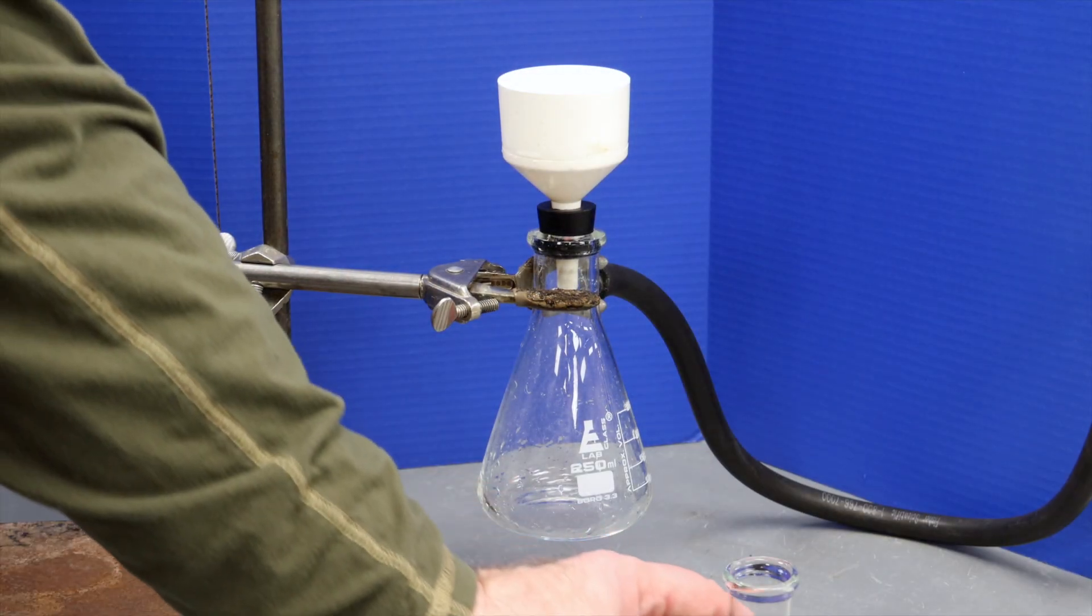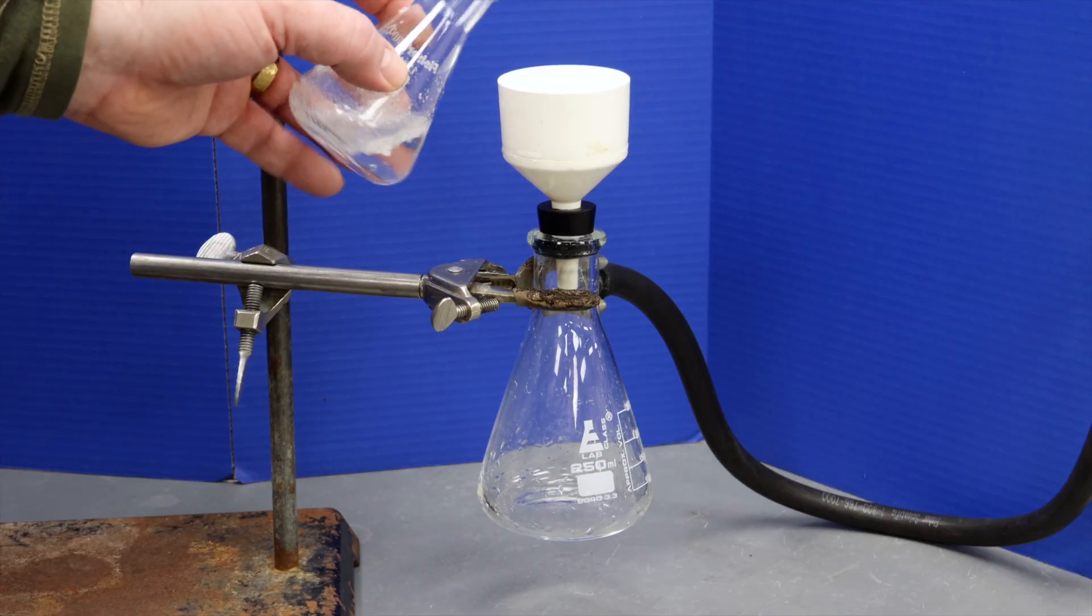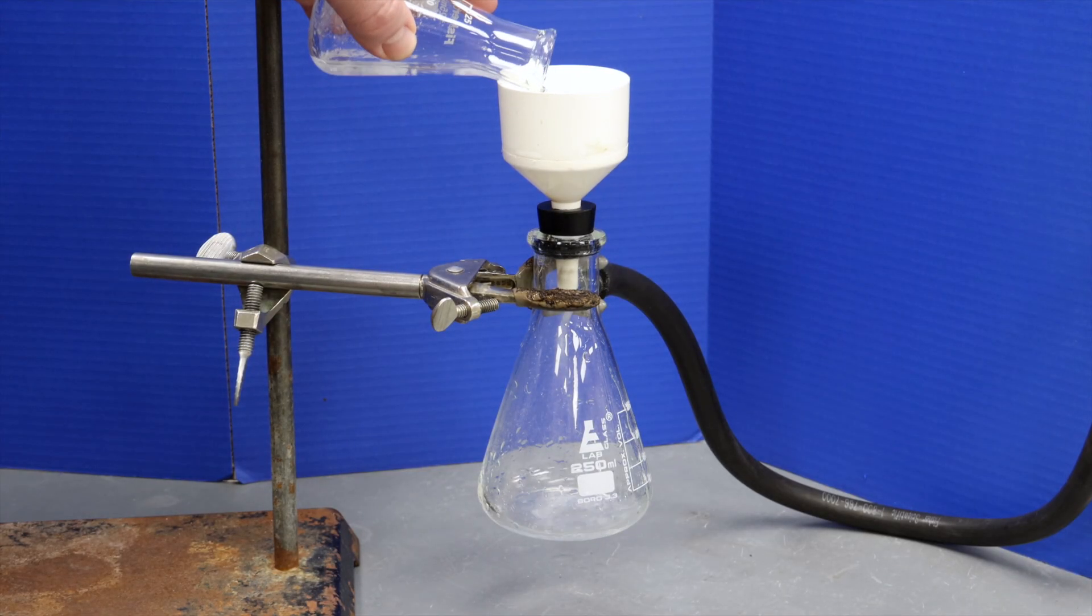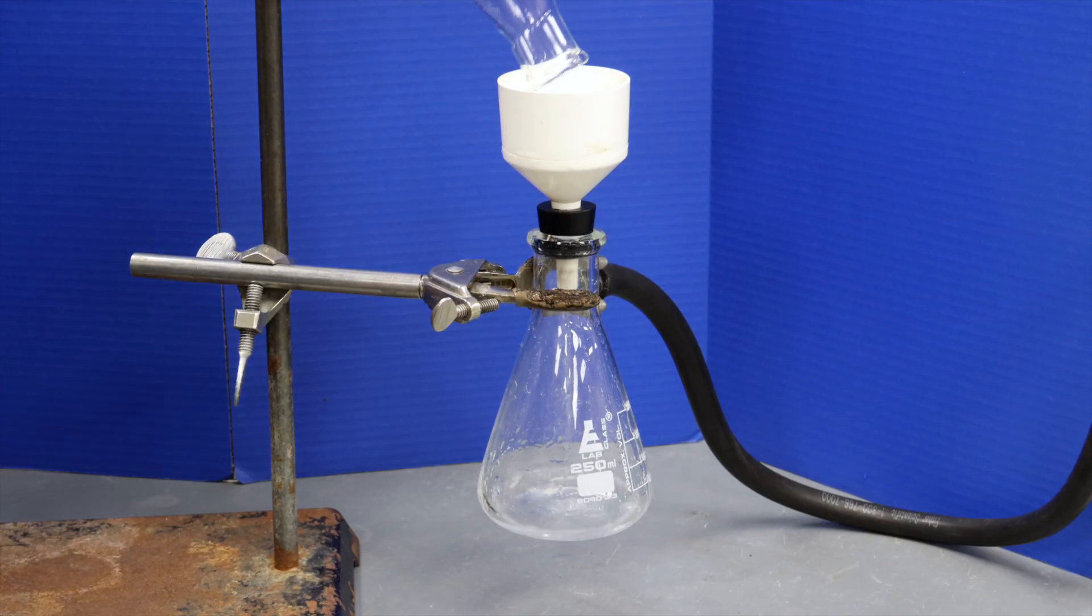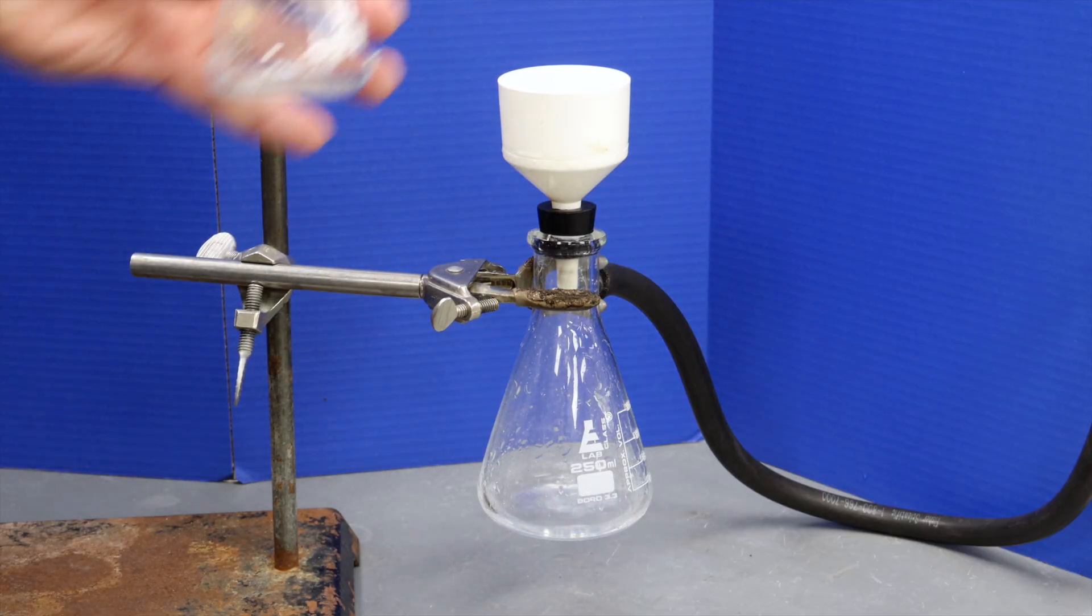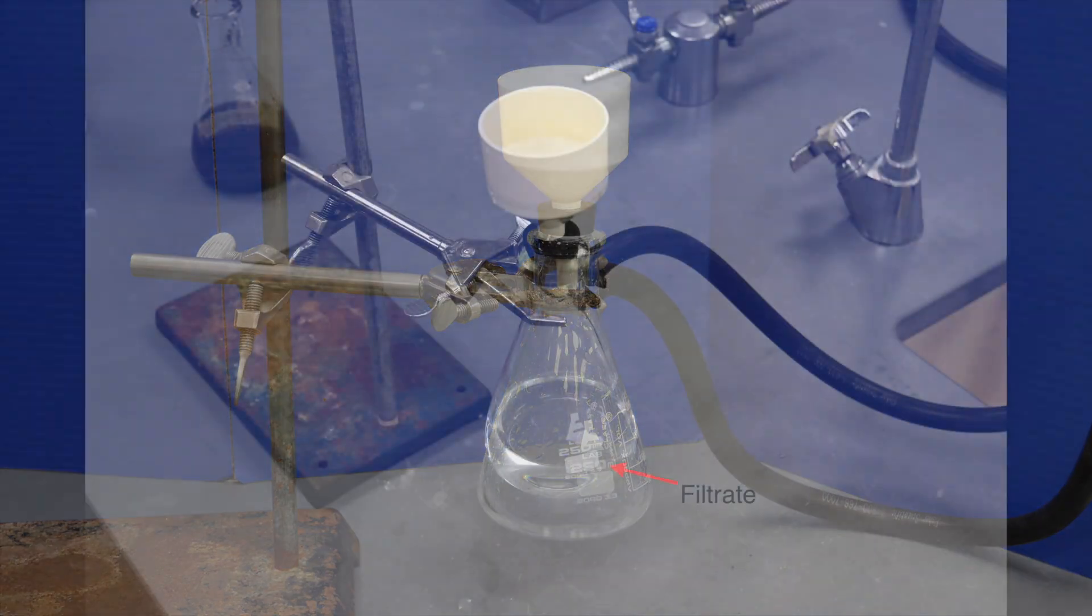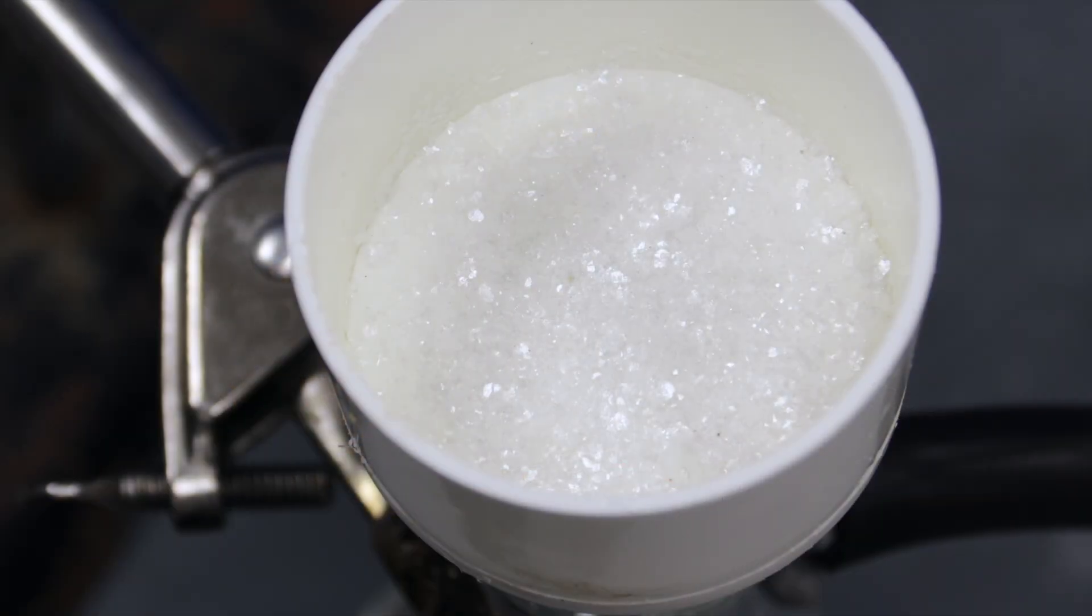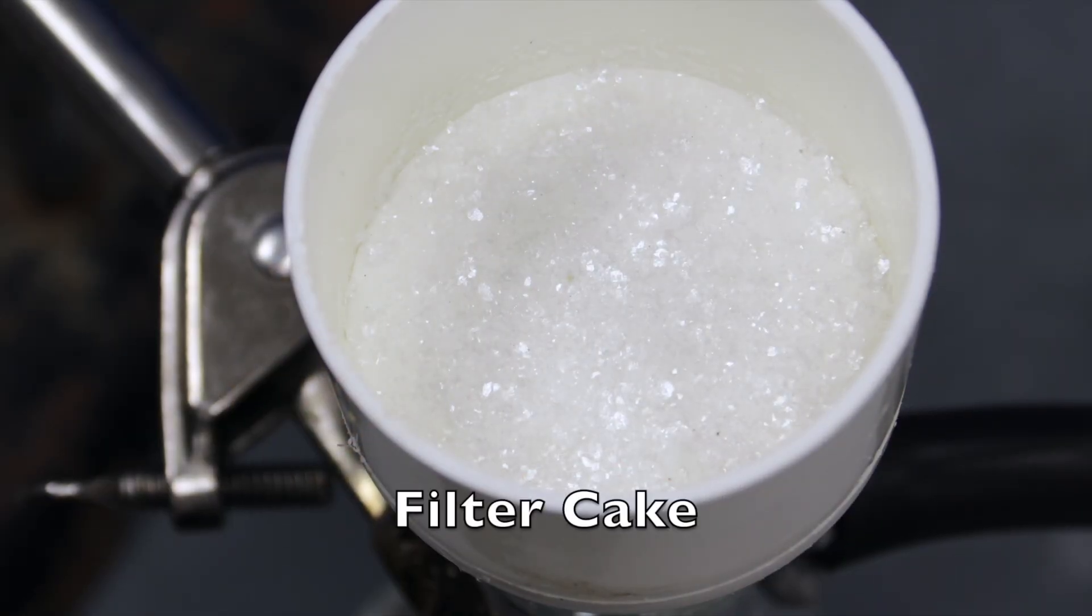Once you are confident that your filter paper is ready to go, carefully pour your mixture through the Buechner funnel. The liquid will be drawn through the filter paper and into the vacuum flask. We refer to the liquid that passes through the filter as the filtrate. The solid material in your mixture should remain on the filter paper. The solid on the filter paper is called the filter cake.